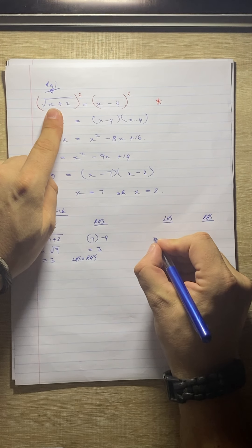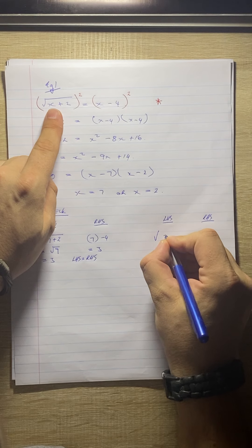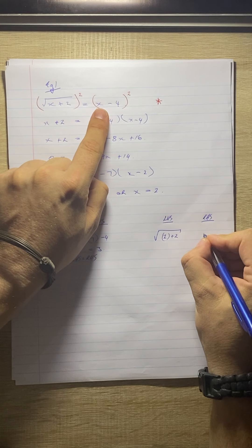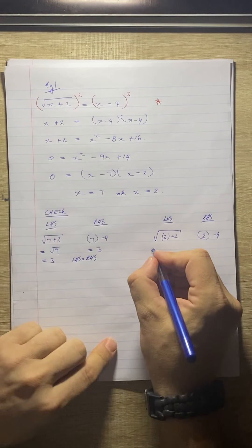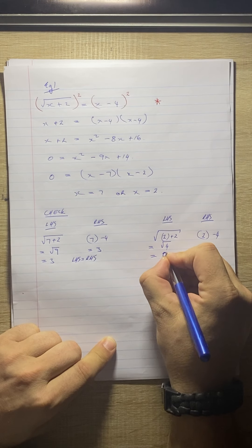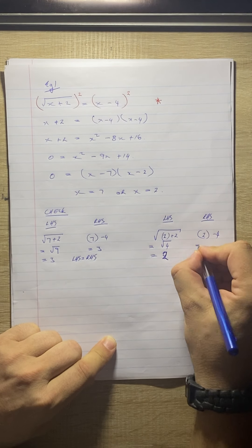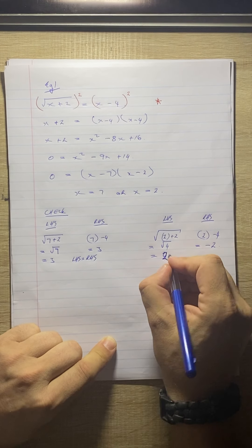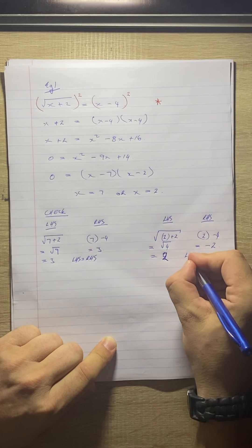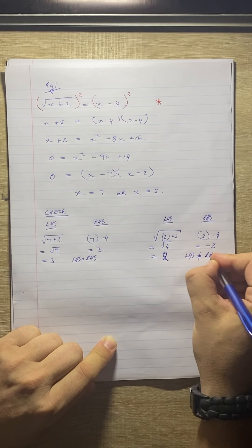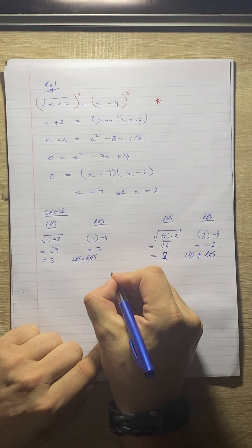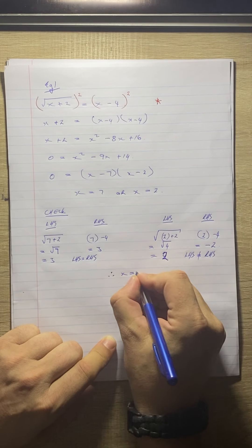Left-hand side: the square root of 2 plus 2. Right-hand side: 2 minus 4. On the left we get the square root of 4 which equals 2. On the right, 2 minus 4 is minus 2. The left-hand side is not equal to the right-hand side — we've got 2 versus negative 2. So x equals 2 is not a solution. Therefore, x equals 7 only.